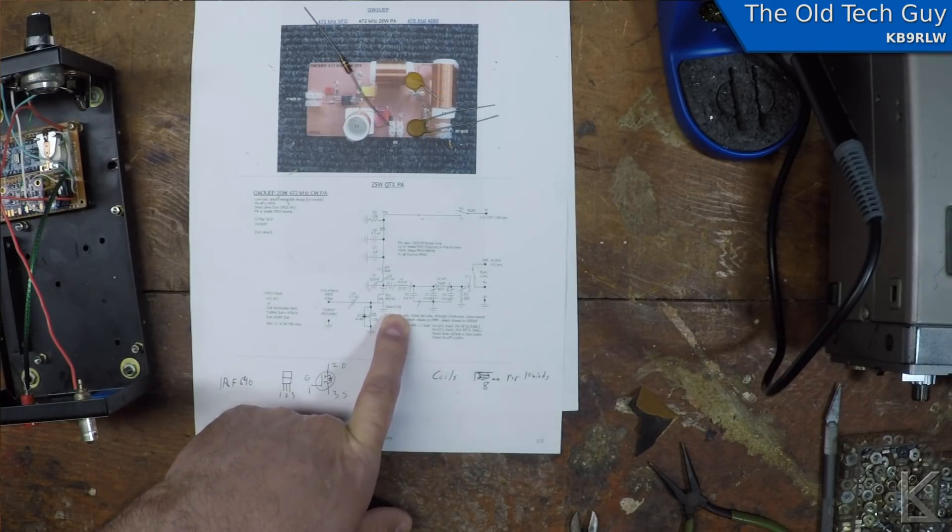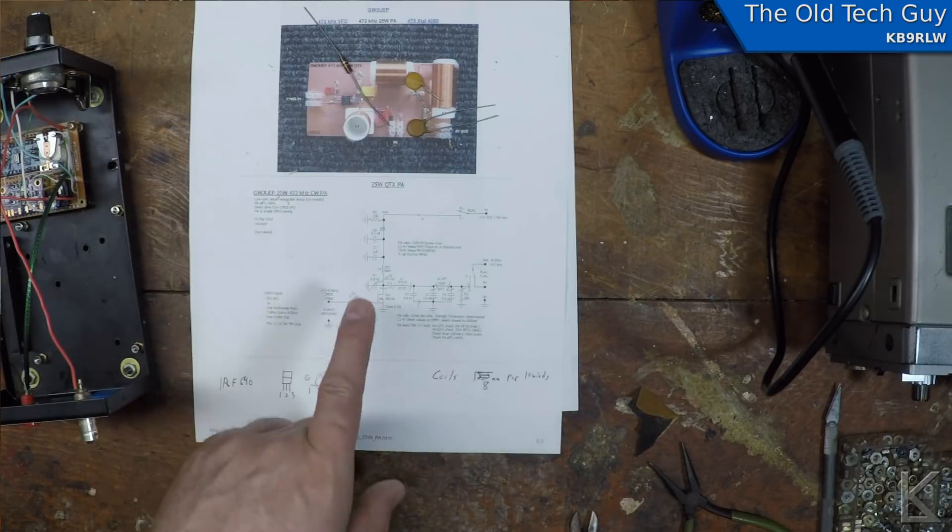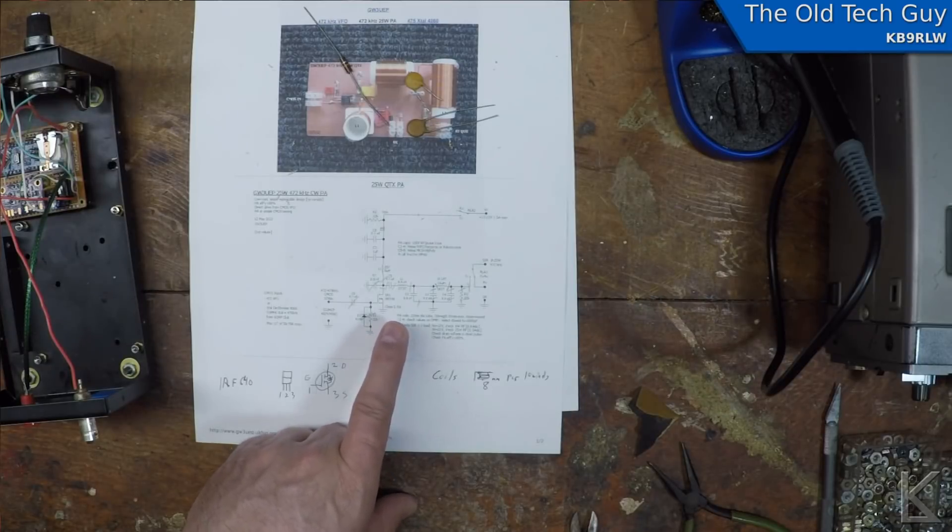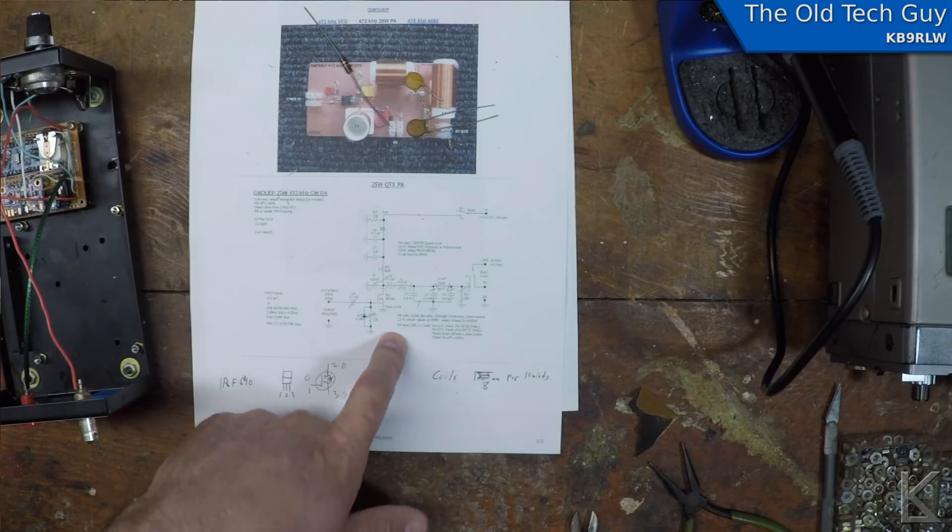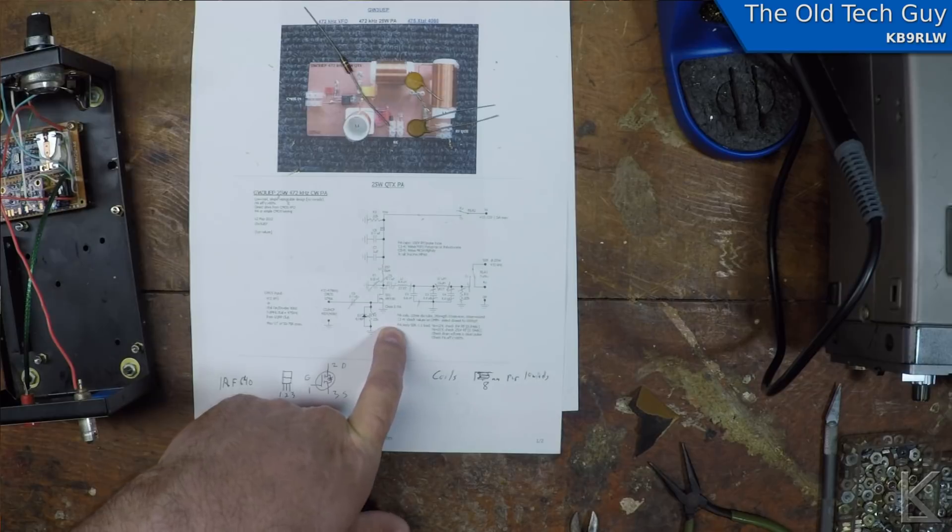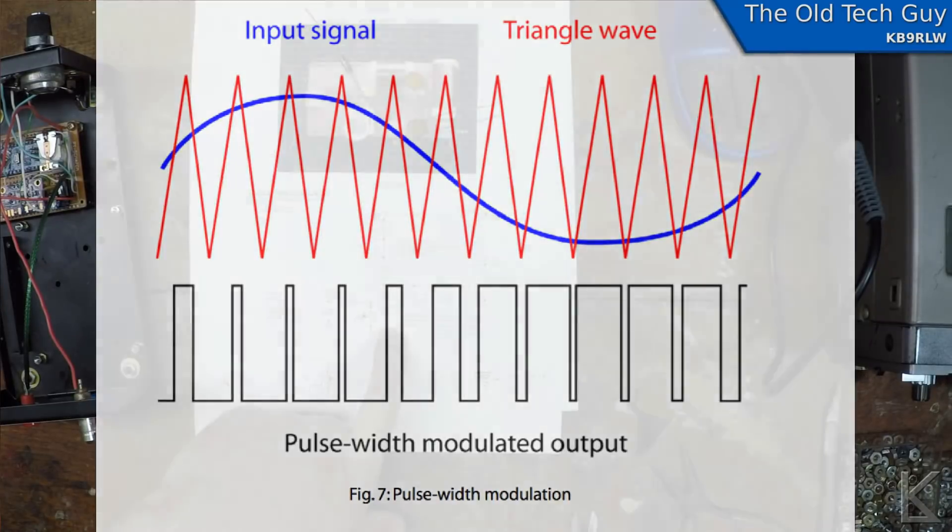Now a class D and a class E amplifier are switching amplifiers where they use a power MOSFET that simply switches on and switches off as the incoming sine wave rises and falls and you get a high efficiency with that but it's a non-linear amplifier so it's only good for carrier modes. Class D is usually used for audio applications and they modulate the pulse width of that switching MOSFET and then use a capacitor network to smooth the output back into an audio waveform.